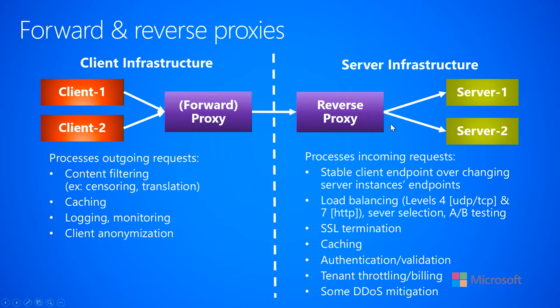You can also use reverse proxies for SSL termination, where you have a certificate at the reverse proxy and HTTPS requests come in. Once that's done, you can make all the internal network traffic non-encrypted — just use HTTP instead of HTTPS. So it's only encrypted up to the proxy, and on the right-hand side of that, it's all unencrypted.